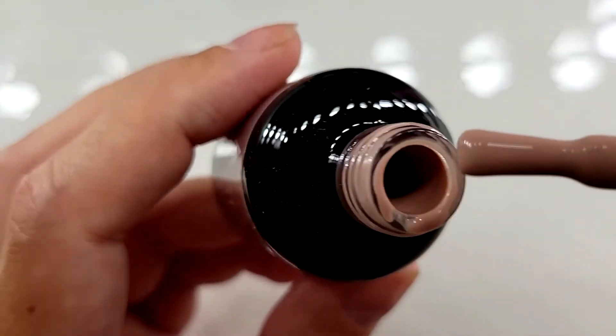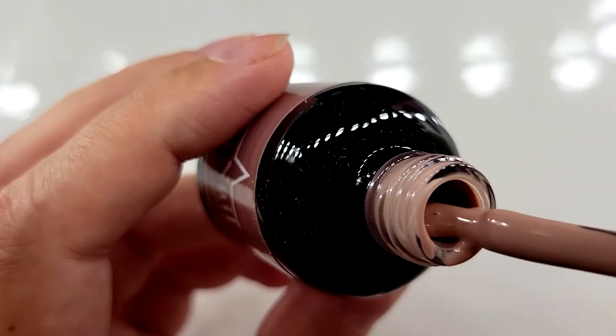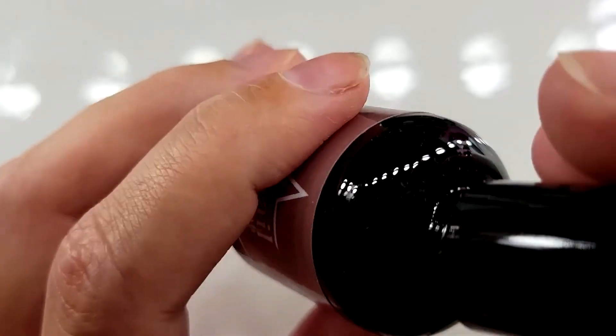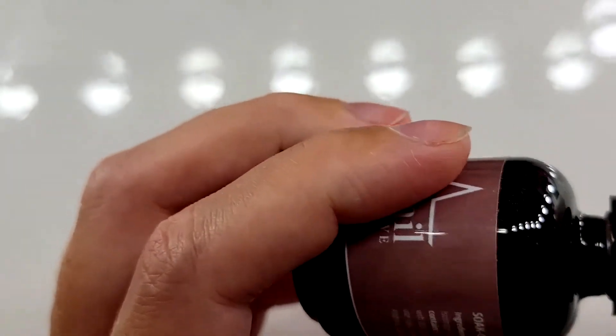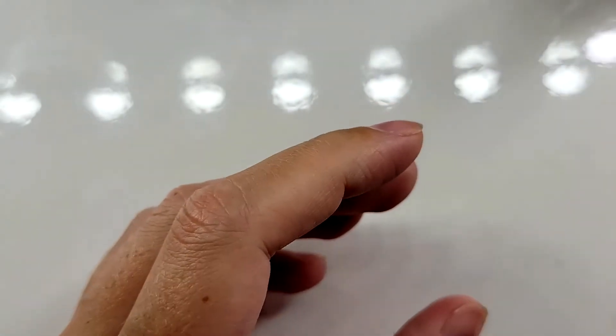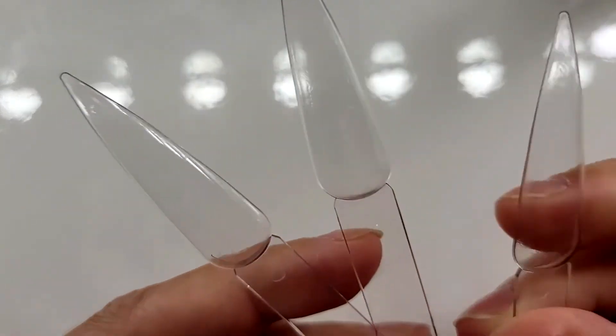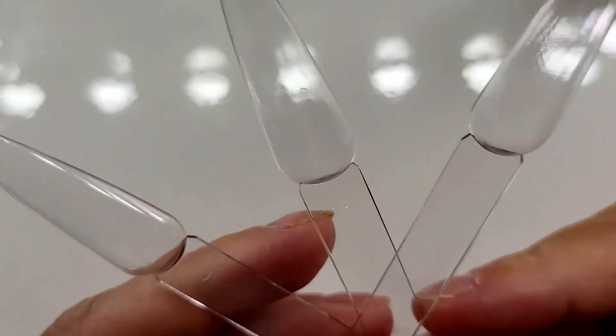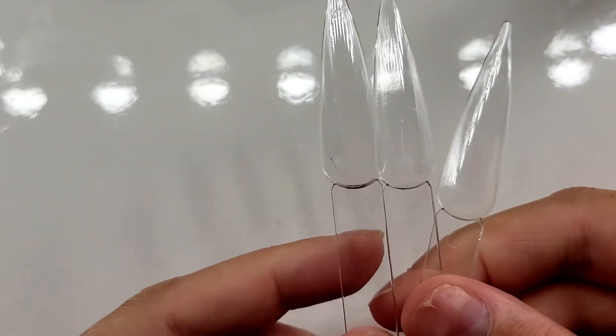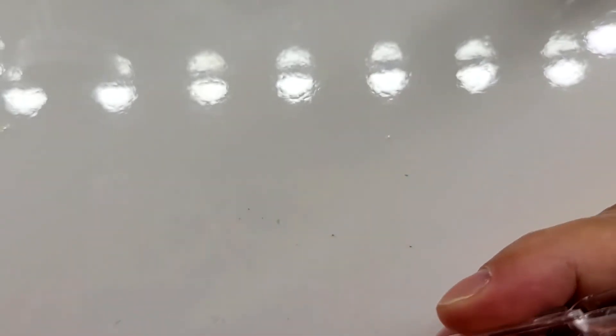But you know, these are really pretty and the consistency looks really nice as well. So I'm gonna go ahead and put them on these swatch sticks. These are just some swatch sticks I got off Shein, so that's what I'll be using to swatch them. So let's check them out.